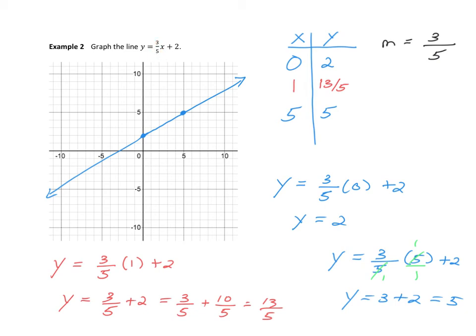It turns out that you can express every line in the form y is equal to mx plus b, where if you write your line like this, the number in front of the x is your slope, and the number at the very end turns out to be your y-intercept. So this number here is 2 — the y value of the y-intercept is 2. If you know the slope and the y-intercept, you can use this formula to get the equation of the line.